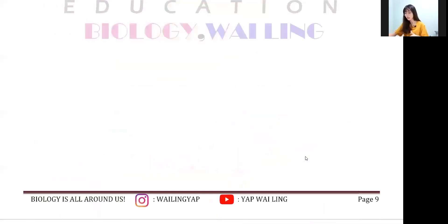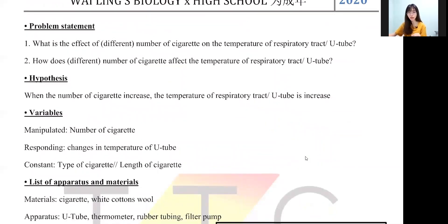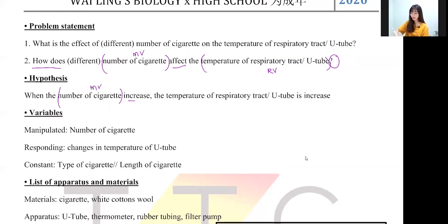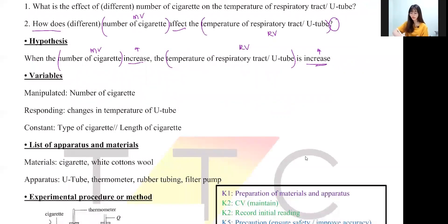Now write your problem statement, hypothesis, and variables. Problem statement: 'Does the number of cigarettes affect the temperature of the U-tube?' — remember the question mark, no question mark means no marks. That one sentence is three marks. For the hypothesis, since the number of cigarettes has a value, write: 'When the number of cigarettes increases, the temperature of the U-tube increases as well.'